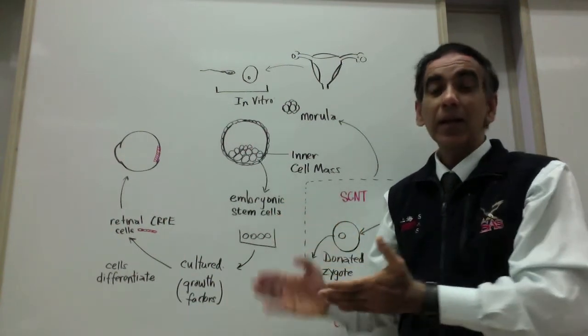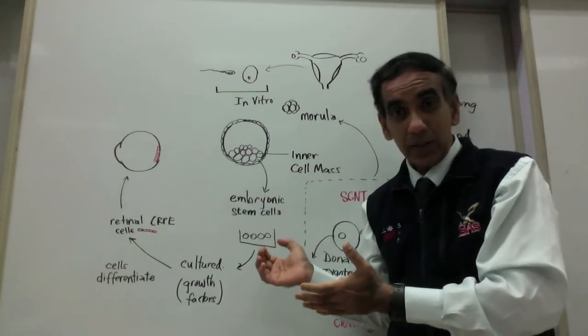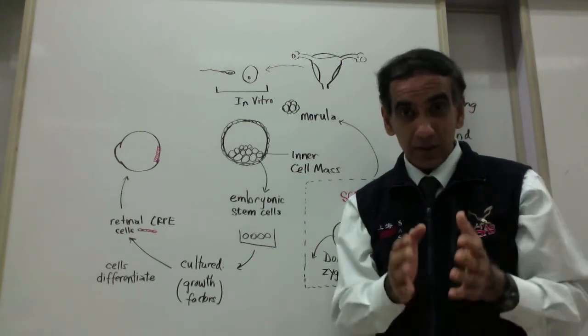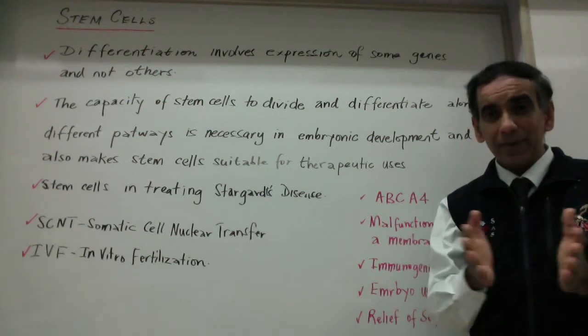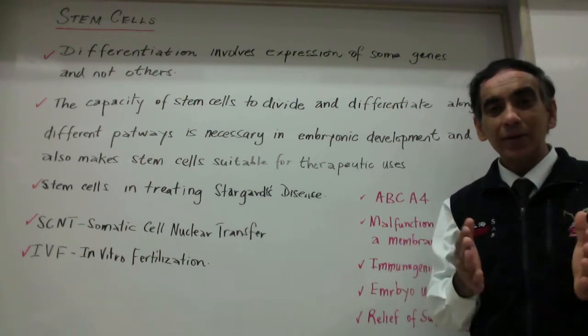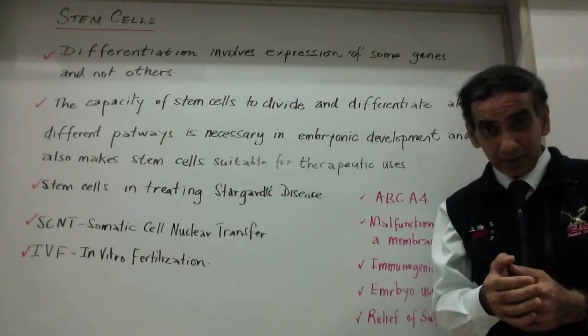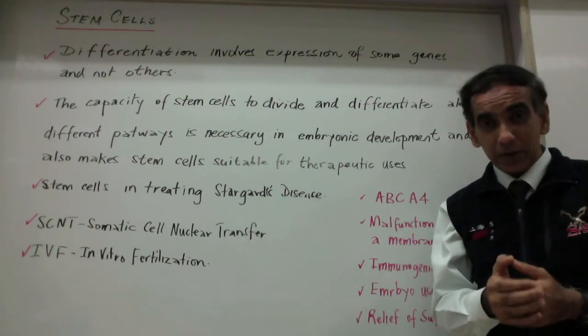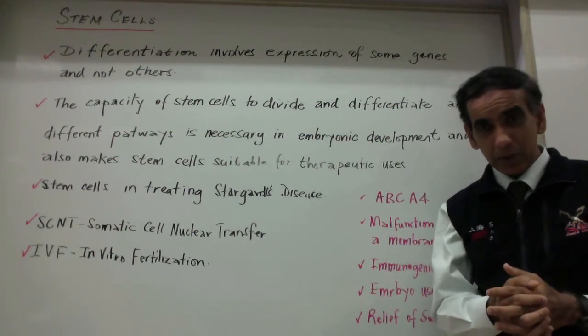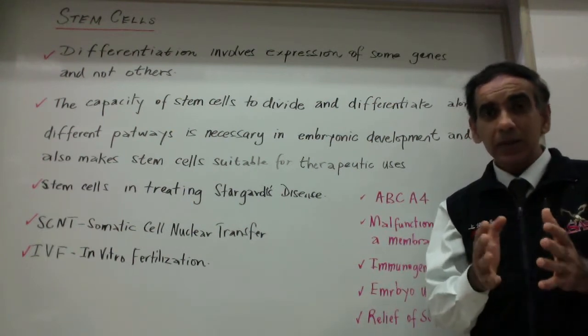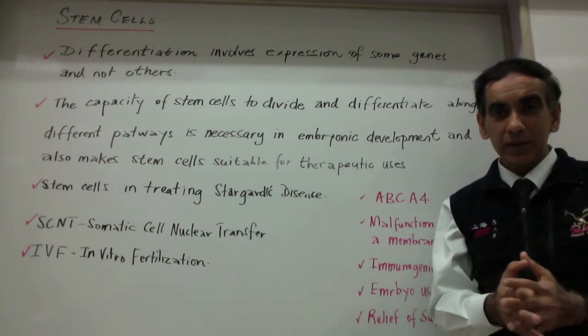So how then can embryonic stem cells be used in the treatment of Stargardt's disease? Stargardt's disease is an eye disorder, otherwise known as a retinopathy, where the cells of the retina are unable to carry out their functions effectively and vision progressively deteriorates. Stargardt's typically shows up in the teen years in most patients.